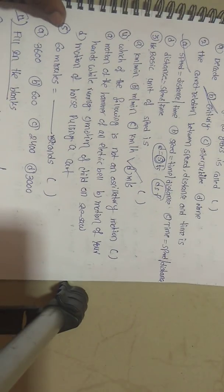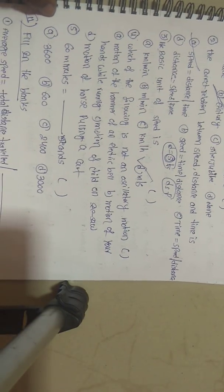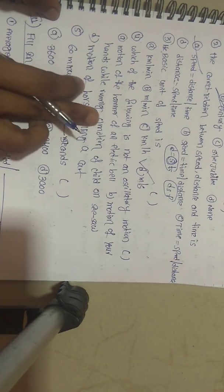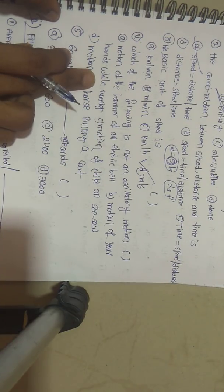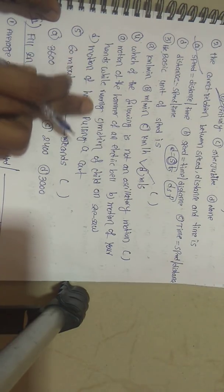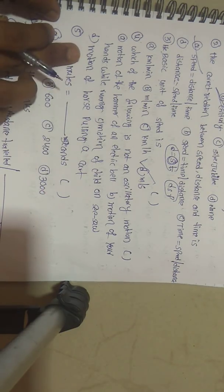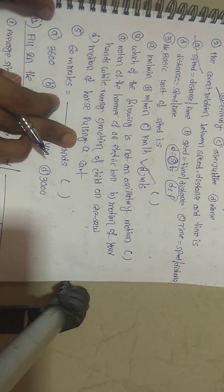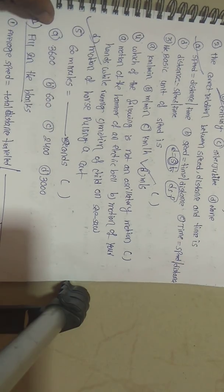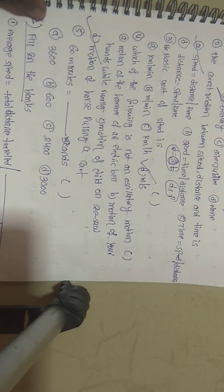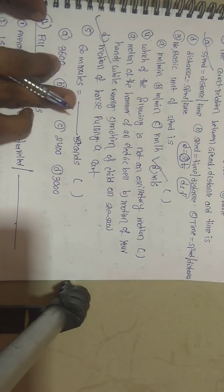Fourth question: Which of the following is not an oscillatory motion? Option A: motion of the hammer of an electric bell, Option B: motion of your hands while running, Option C: motion of a child on a seesaw, Option D: motion of horses pulling a cart. The answer is Option D — motion of horses pulling a cart is not an oscillatory motion.